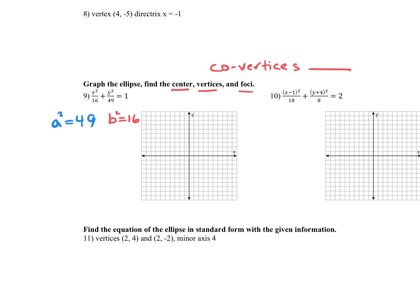I need the c-value in order to find the focus. So c squared equals a squared minus b squared: 49 minus 16, so c squared equals 33. Then square root it: plus and minus the square root of 33. Wherever the bigger number is, that's your major axis. Since 49 is under the y-squared, the major axis is going to be vertical, and the minor axis will be horizontal.